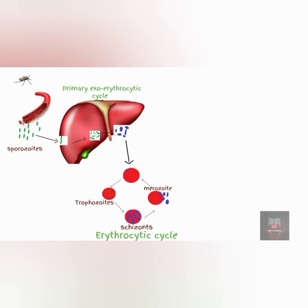Some of the released merozoites undergo sexual reproduction to form gametocytes. These gametocytes can be taken up by the female Anopheles mosquito during its next blood meal. These gametocytes undergo sexual reproduction in the mosquito to form a zygote.